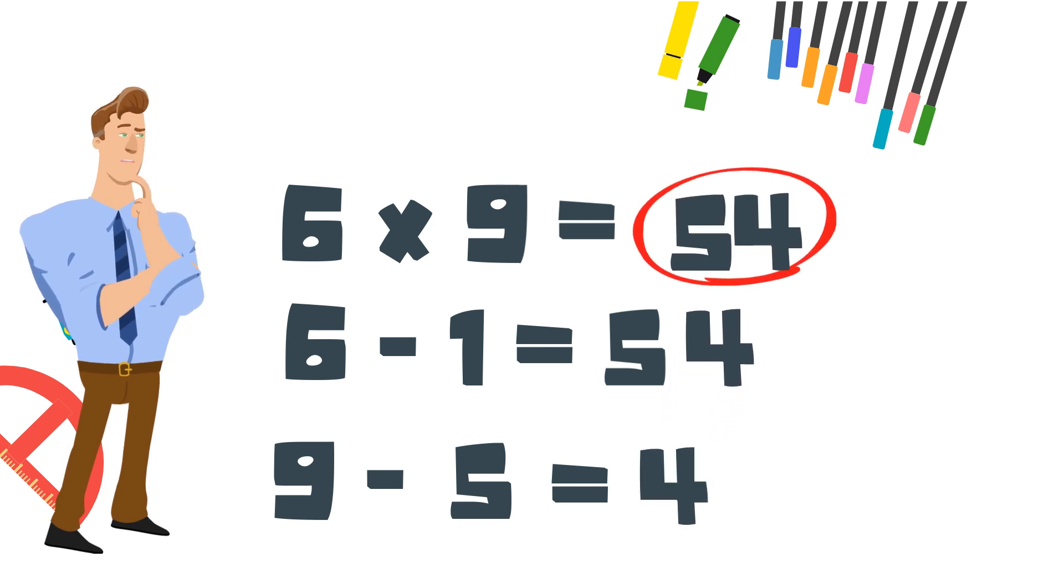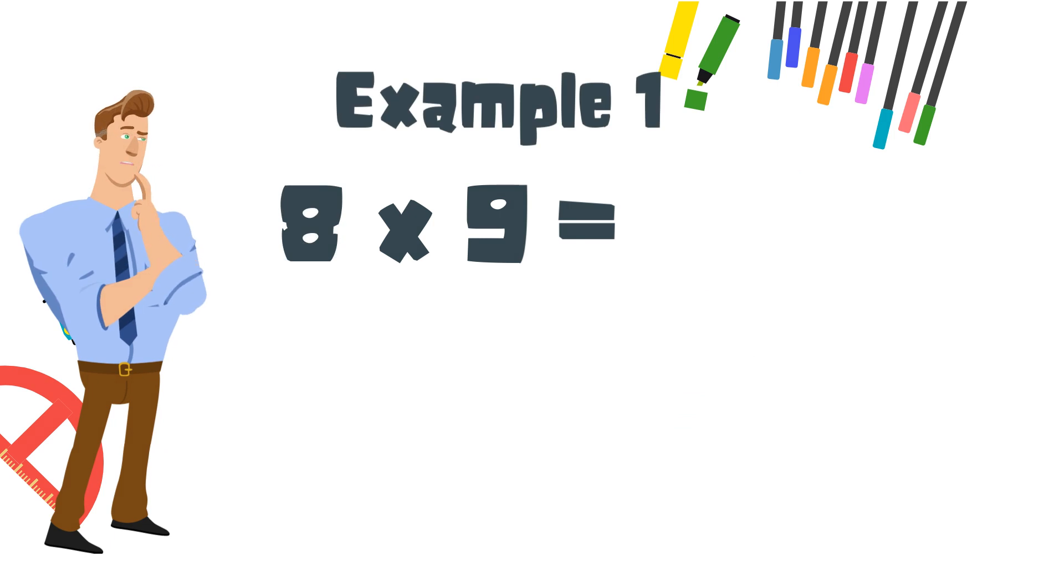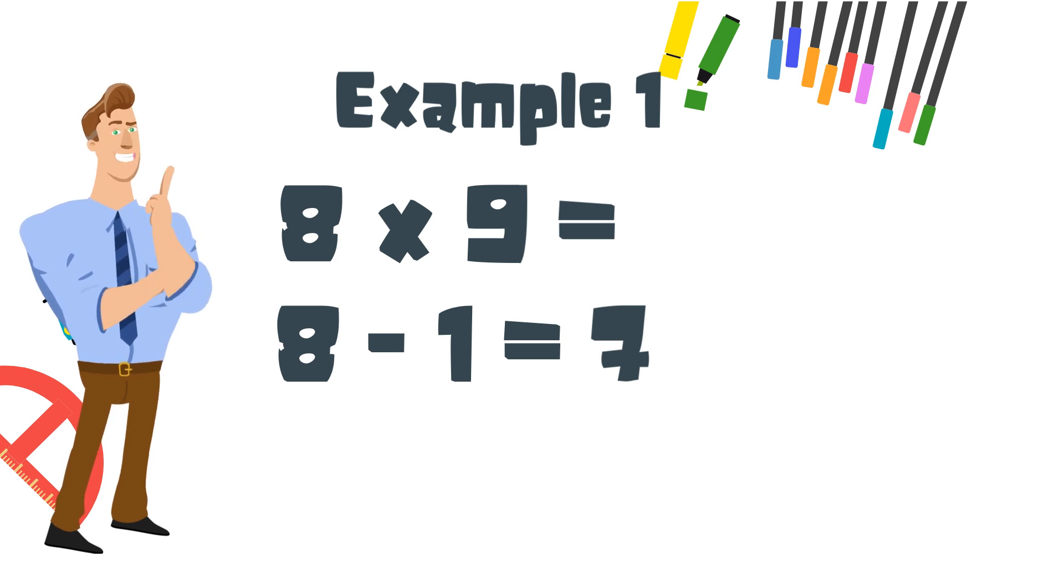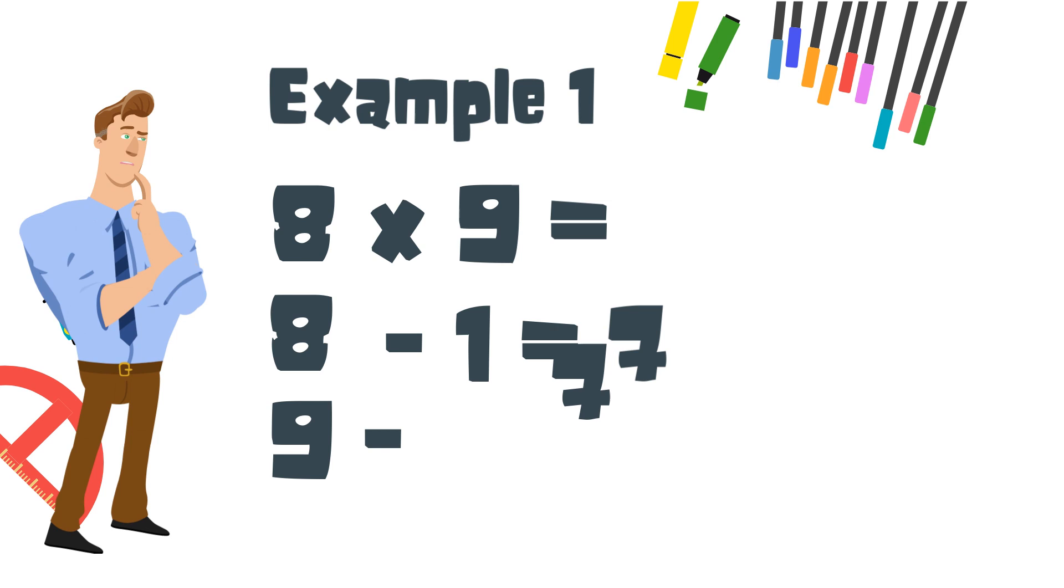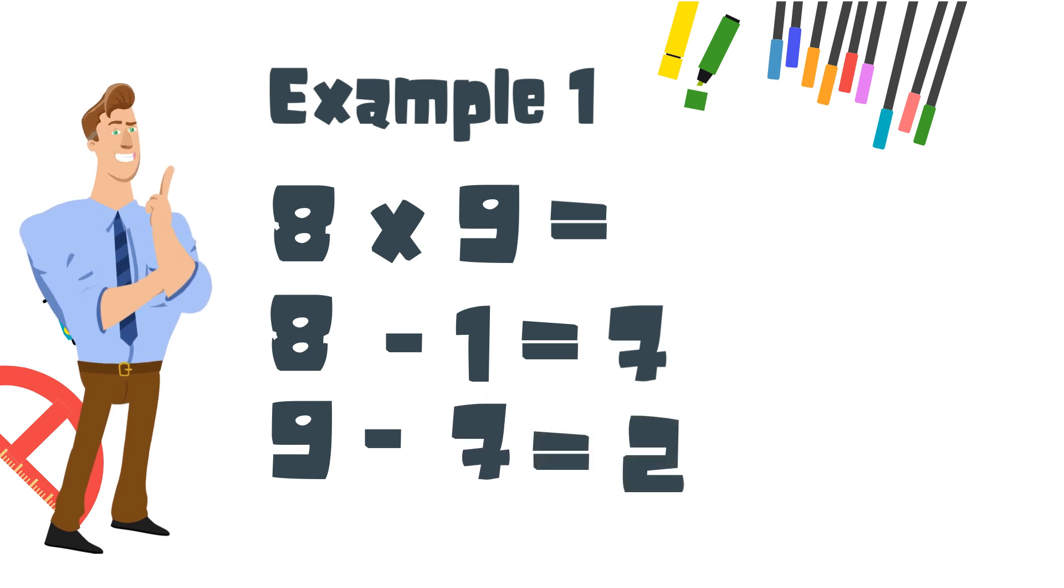Let's work some examples. Up first, 8 times 9. Step 1. 8 minus 1 equals 7. This is your first digit. Step 2. 9 minus 7 equals 2. This is your second digit. So, 8 times 9 equals 72.